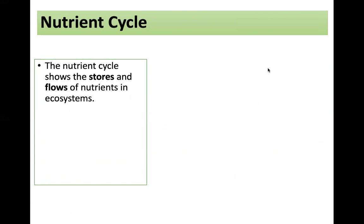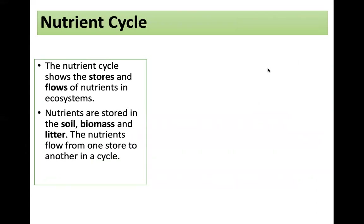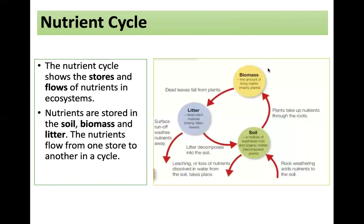If we look at the nutrient cycle in ecosystems, this shows the stores and the flows that happen in ecosystems. Nutrients can be stored in the soil, in biomass and in litter, and the nutrients flow from one store to another in a cycle. You can see here in this diagram how in the biomass — the living matter of those plants — dead leaves fall from the plants, become part of the litter, decompose into the soil, which is a mixture of weathered rock and organic matter, and then are taken up again through the roots of those plants into the biomass.